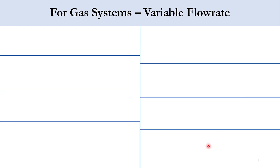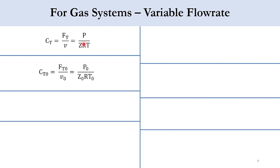Now coming to the gas phase system — this is a variable flow rate system. We know from the gas law that total concentration equals total flow rate divided by volumetric flow rate, and that equals P over ZRT. For initial conditions, Ct0 equals Ft0 over v0, where P becomes P0, T becomes T0, and Z becomes Z0.